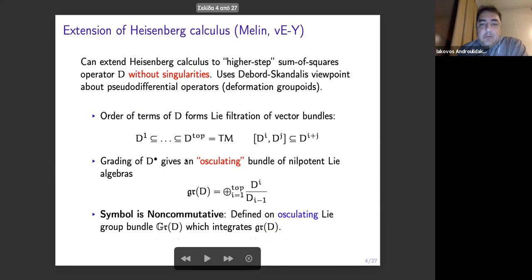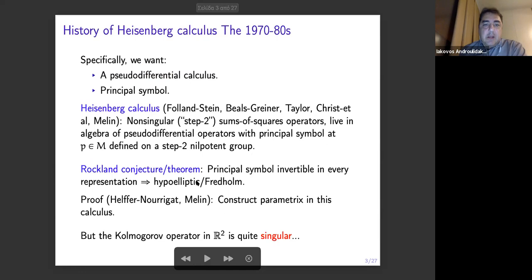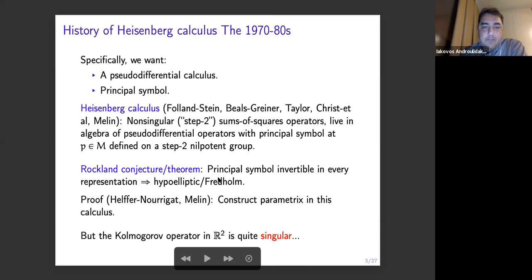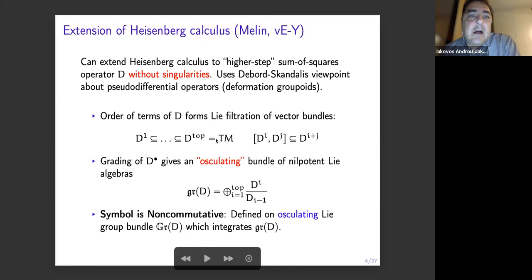And people were able to prove — it was a conjecture, but then it was proven — that if the principal symbol is invertible in every representation of this group, then the operator is hypoelliptic, and it's actually Fredholm. But all of this doesn't hold for the Kolmogorov operator in R² because of the singularity. Some more work came up very recently — there is work by Melin, and very recently by Eric van Erp and Robert Junkien, where they extended the Heisenberg calculus to higher steps — some higher-order Heisenberg calculus operators — but still without singularities.